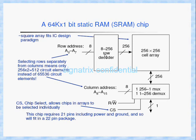This is the row decoder. The row address goes from 0 to 7, so that is a total of 8 bits. By using 8 bits we can decode up to 256 combinations. That is why selecting rows separately from columns means 256 by 2, which is nothing but 512 circuit elements.